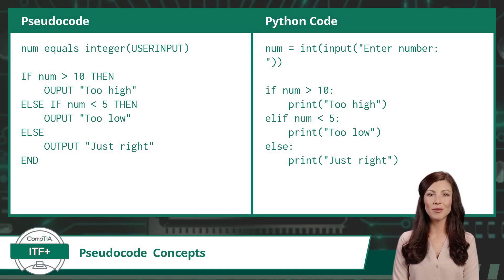Here is an example of some pseudocode, and I have placed it side by side with its equivalent Python code. The pseudocode on the left is just a plain language description of the steps in an algorithm. It uses structural conventions of a normal programming language, but is intended for human reading rather than machine reading.